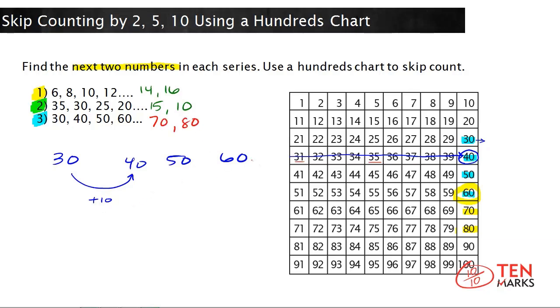And you can double check this because you left off the pattern at 60 and we know the rule is add 10. 60 plus 10 equals 70. And then you add 10 again from 70 to get the next missing number. 70 plus 10 is 80.